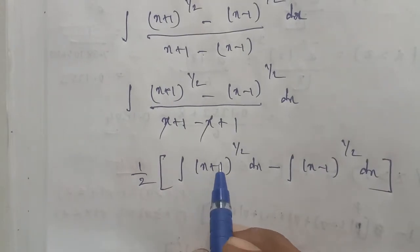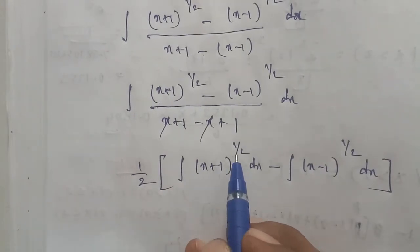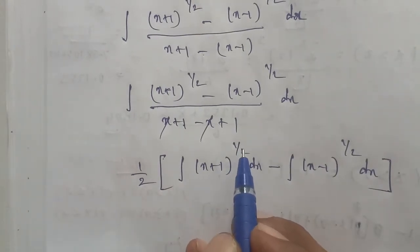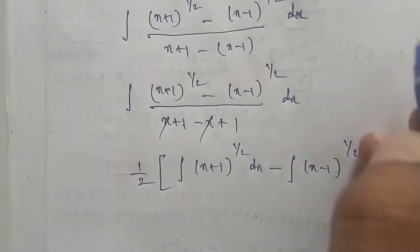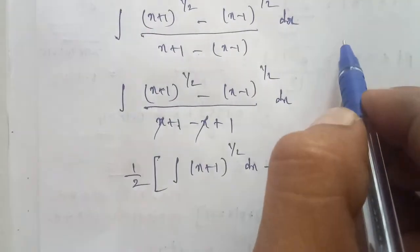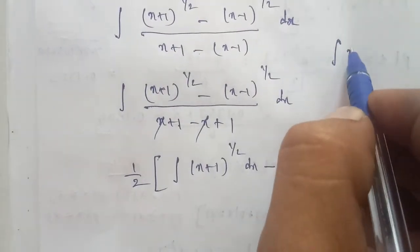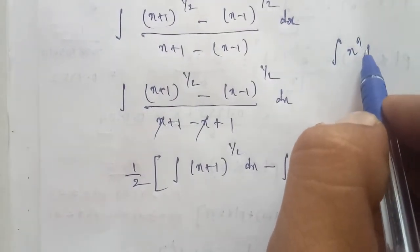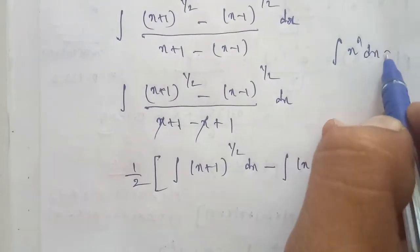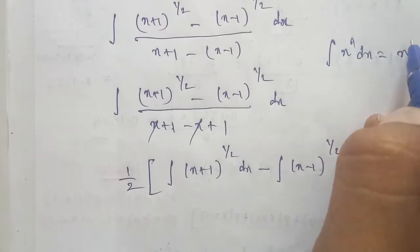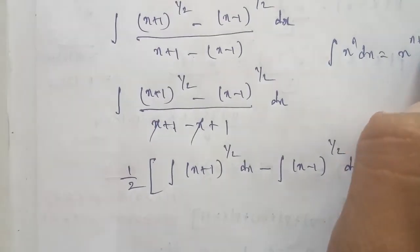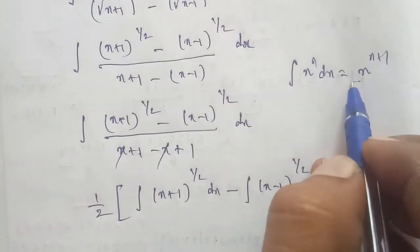So the entire answer is to be done. First of all, the formula: the formula for integration of X power n. The formula is integration of X power n dx equals X power n plus 1 by n plus 1.